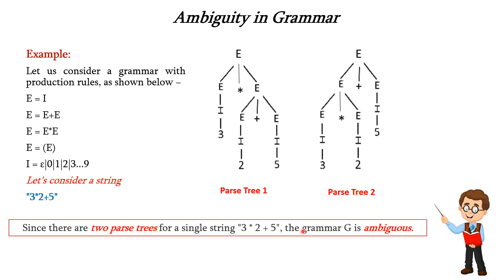Since we are getting more than one parse tree, it is called an ambiguous grammar. This is also applicable for leftmost derivation — we have two leftmost derivations, as we are expanding from left to right in both parse trees. Thus this grammar is an ambiguous grammar. We have discussed the concept of ambiguous and unambiguous grammar. Thank you.